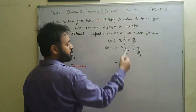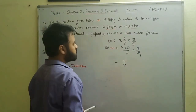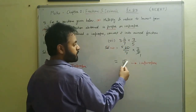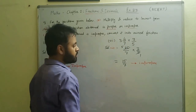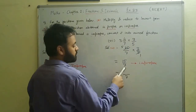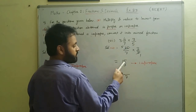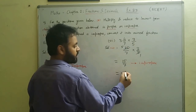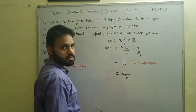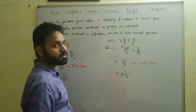After cancelling, we multiply: five times three is fifteen and seven times one is seven, giving fifteen by seven. We cannot reduce this further as fifteen and seven are not divisible. The numerator is greater than the denominator so it is an improper fraction. Dividing fifteen by seven: seven twos are fourteen, remainder one, so the mixed fraction is two and one by seven.